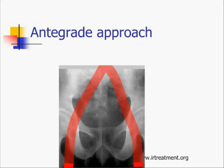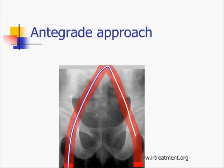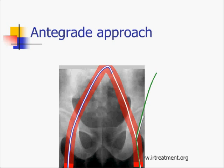How do you do an anterograde approach? This shows it in a very simple way. Take a catheter across the bifurcation, then take a wire across the bifurcation across the common femoral artery. Then under fluoroscopic guidance, puncture the common femoral artery — making the puncture easier, elegant and safer. Now you have accessed the vessel, and you realize it's fast and very simple.